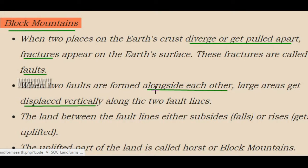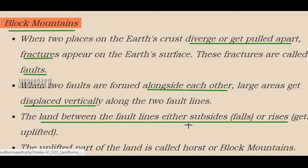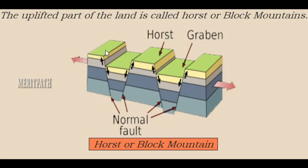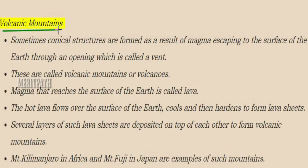When these faults are formed beside each other, larger areas of land get displaced vertically. The land between the fault lines either subsides or gets uplifted. That uplifted part of the land is known as the horst land or block mountain. The fallen parts are faults, and the uplifted parts are block mountains.